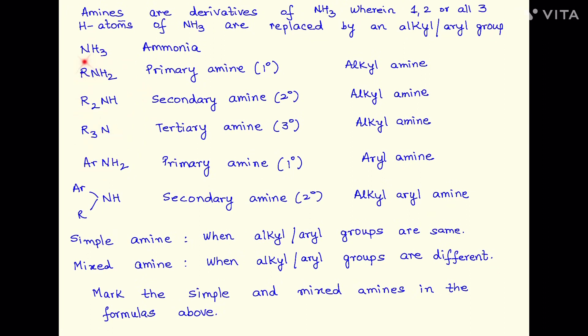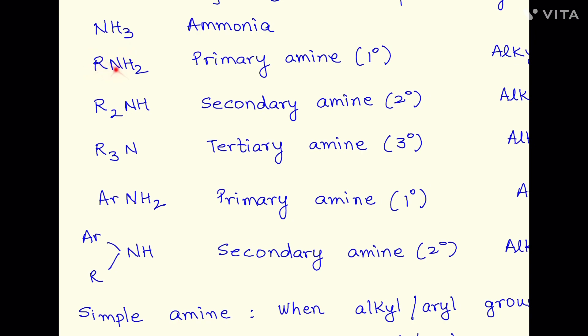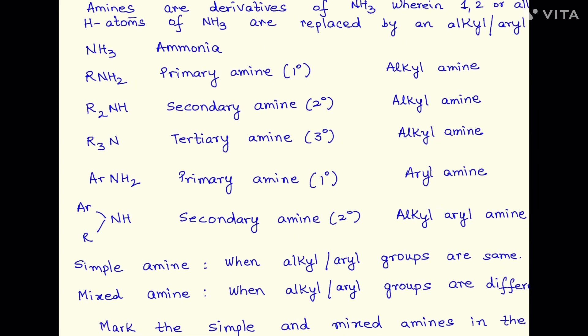Now, if you replace the hydrogen by alkyl group like we see in the case of this primary amine, then of course they are called as alkyl amines. If on the other hand you replace the hydrogen by an aryl group, then in that case it would be called as an aryl amine.